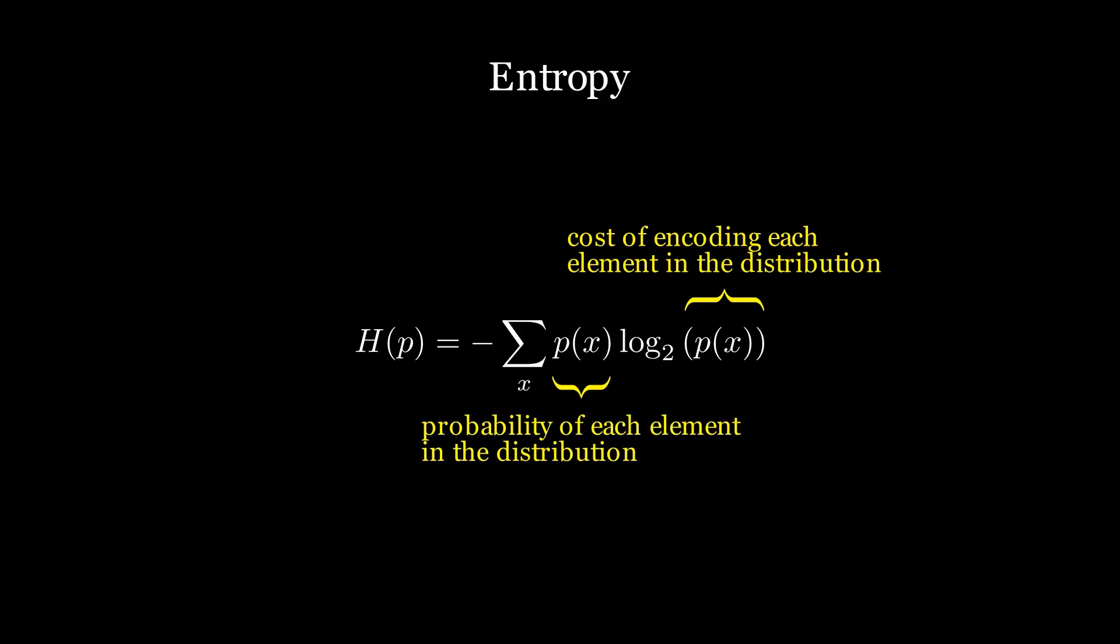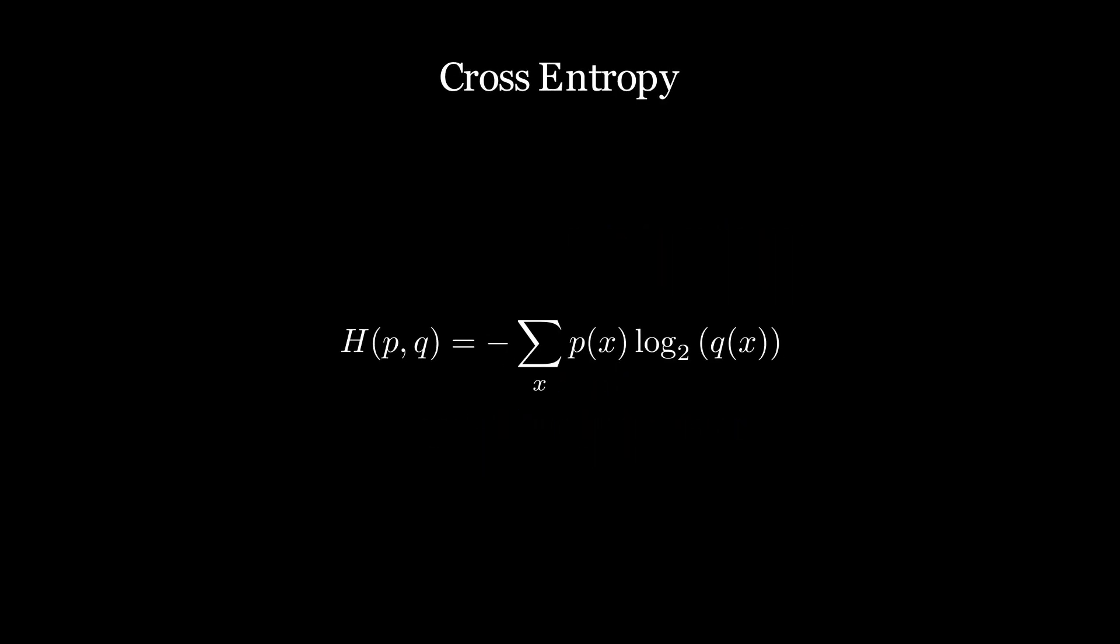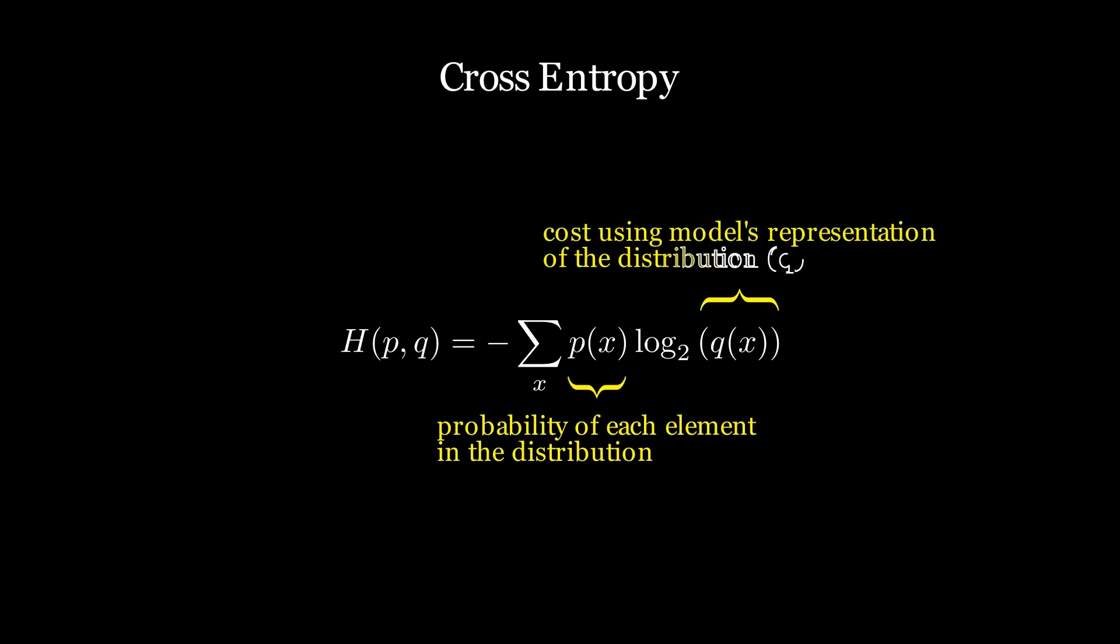In machine learning, we have real-life data which we represent as a distribution p(x) and our models are trained to create a representation q(x) which is like an encoding in our case. When we calculate the cross entropy, we are measuring how close this representation is to the original distribution. By minimizing this, we improve our model's performance on real-world data. And now you completely understand cross entropy.